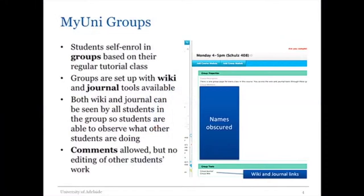The first thing we've done is use MyUni to set up groups, each based around the pre-organised tutorial groups that students have enrolled into. This enables us to make use of the wiki and blog tools on MyUni, which can be integrated into those groups. These have been set up to minimise opportunities for students to edit each other's work, but we do want students' formative work to be observable by all other students. We've encouraged students to use the comment feature so they can offer peer evaluation and peer guidance to each other.